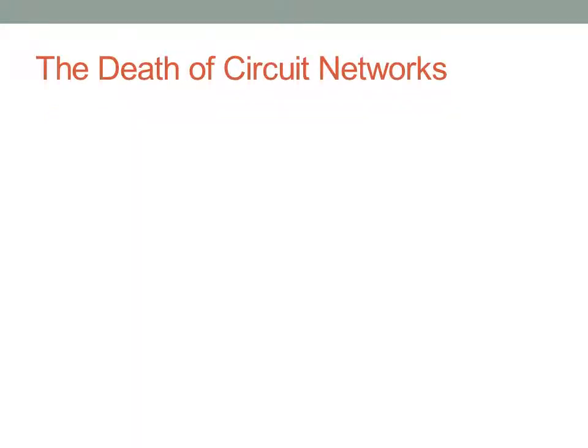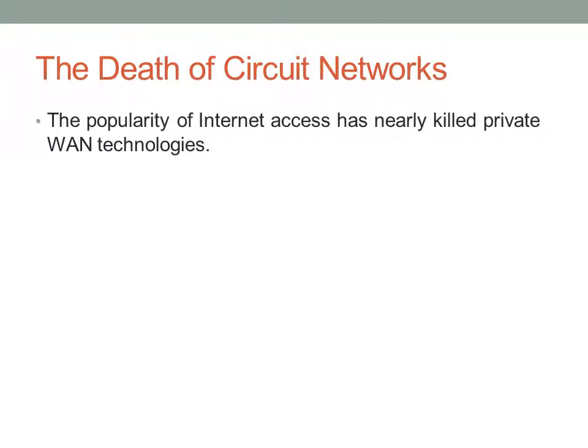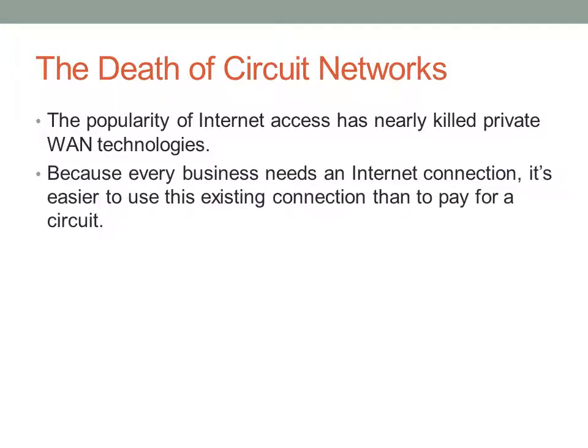The idea here is that as we move to an internet-based system, we don't need these private WAN technologies like point-to-point tunneling or frame relay. You can just use the internet, because every business needs an internet connection almost. It's easier to just use this existing connection — you don't have to buy an additional leased circuit for your WAN. You can just use the internet as a point-to-point connection.